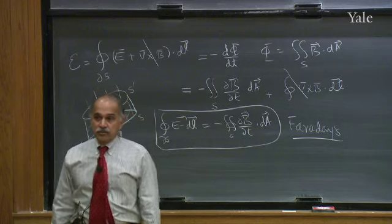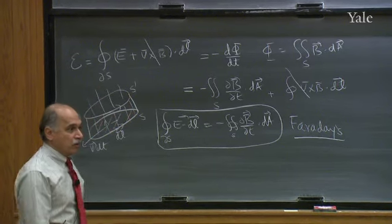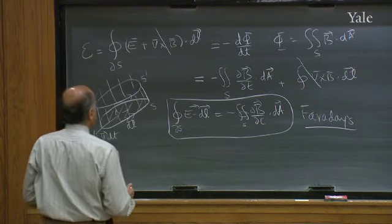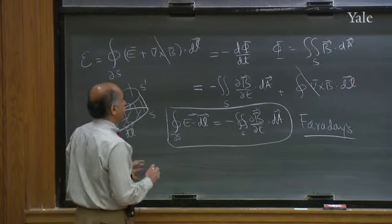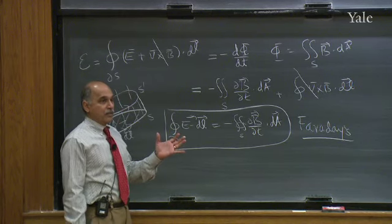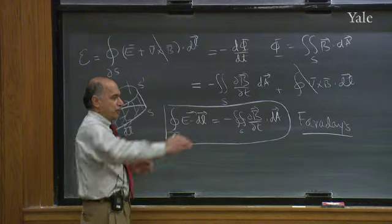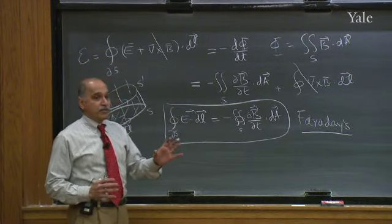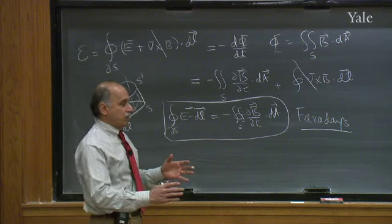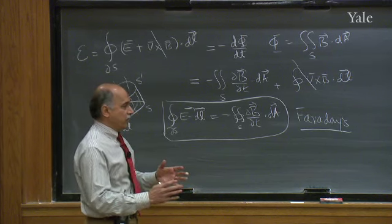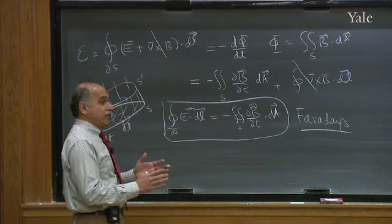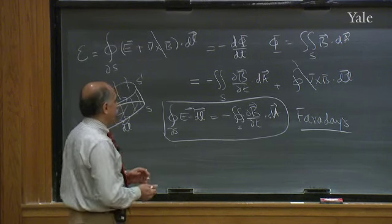It's a basic statement about electric and magnetic fields: if you have a changing, time-dependent magnetic field, it will generate an electric field which, unlike the electrostatic field, will have a line integral which is not zero. It's a non-conservative electric field whose origin is not electric charges but really changing magnetic fields. This is called Faraday's Law — a very profound statement about electric and magnetic fields.